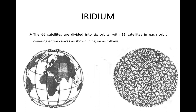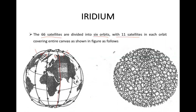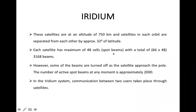In Iridium, or Dysprosium, the 66 satellites are divided into six different orbits. So there are 66 satellites total across six orbits, with 11 satellites in each orbit, covering the entire globe as you can observe in the figure. These satellites are at an altitude of 750 kilometers, and satellites in each orbit are separated from each other by approximately 32 degrees of latitude.